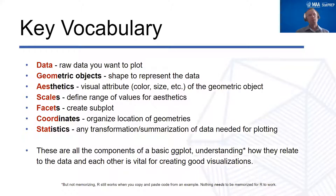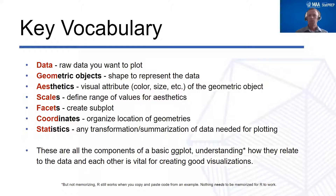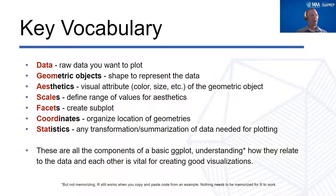Going back to that grammar of graphics, when we jump into ggplot2 we have key vocabulary repeated over and over again. We're going to need data — raw data to plot. We need to identify geometries: geometric objects or shapes to represent the data. We'll map variables to the page using aesthetics — what visual attribute does the geometric object have? Then we define scales for those aesthetics and, if needed, create subplots with facets or calculate summary statistics.